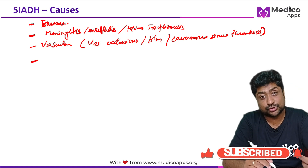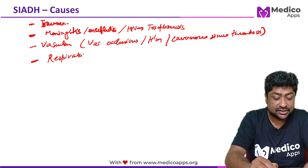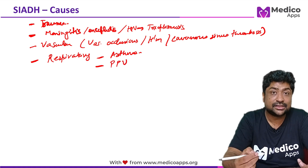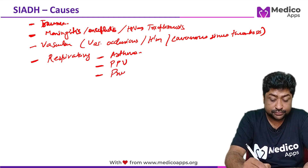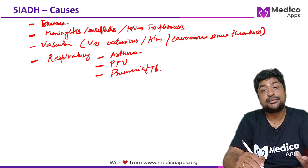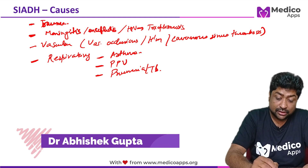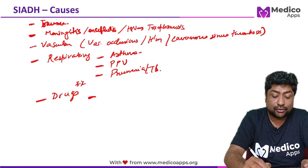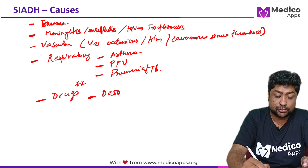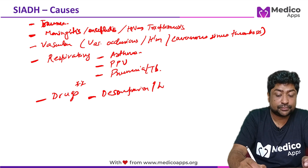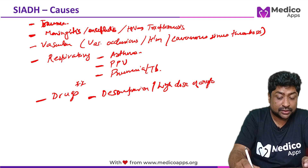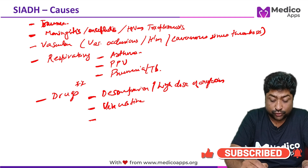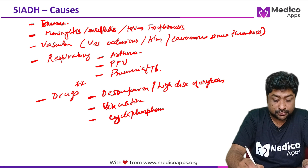There are also respiratory causes of SIADH. One of the most important is asthma. Second, positive pressure ventilation can cause increased vasopressin production. Pneumonia and tuberculosis can also sometimes increase vasopressin production and present as SIADH. Regarding drugs that cause SIADH: desmopressin — because it is essentially anti-diuretic hormone — high doses of oxytocin, Vincristine, and Cyclophosphamide are all implicated.